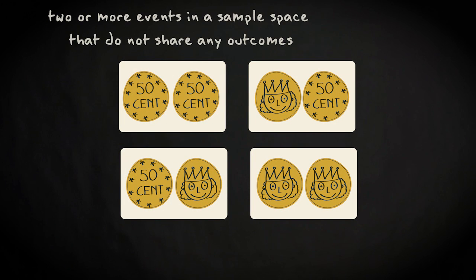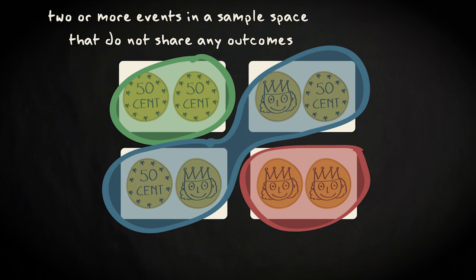Now there can be two or more events in a sample space that do not share any outcomes. For example, the cases where your double toss would result in zero, one or two heads. These events are said to be disjoint. Another term for it is mutually exclusive.